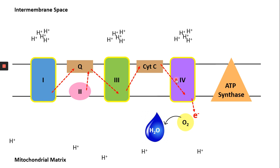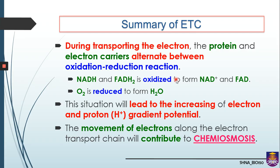That concludes the explanation on ETC. In summary, during the transporting of electrons, proteins and electron carriers alternate between oxidation and reduction: NADH and FADH2 become oxidized, forming NAD+ and FAD, while oxygen is reduced to form water. This increases the proton gradient potential. The movement of electrons along the electron transport chain contributes to the process of chemiosmosis, which is the next part of oxidative phosphorylation.